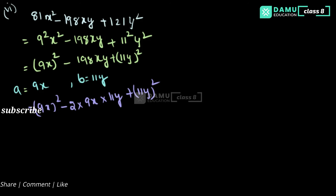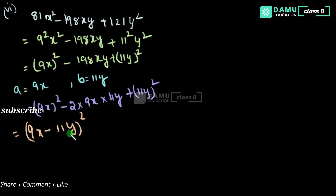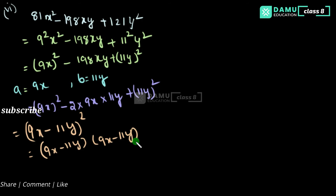So a equals 9x and b equals 11y. The expression is in the format of a squared minus 2ab plus b squared, which means (a − b) whole square. So we can write (9x − 11y) whole square as (9x − 11y) into (9x − 11y). This is the way to factorize the given expression.